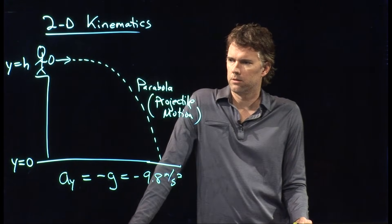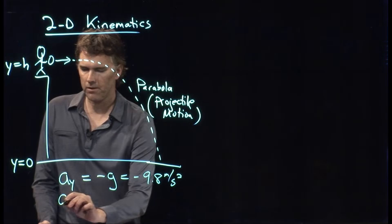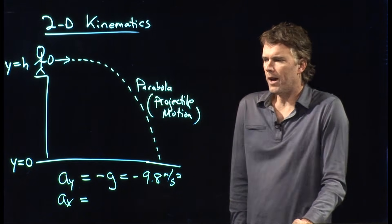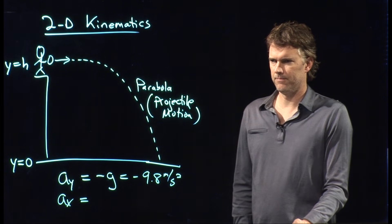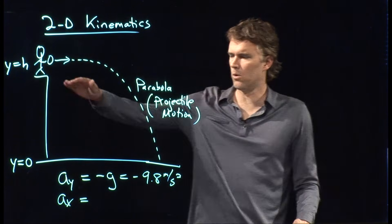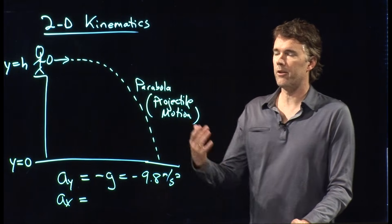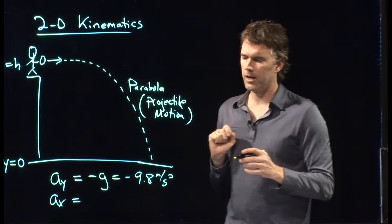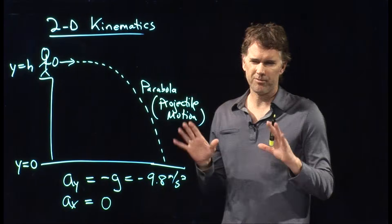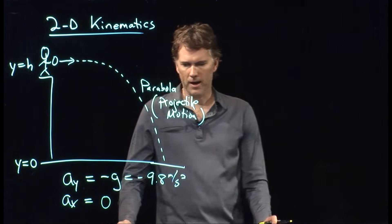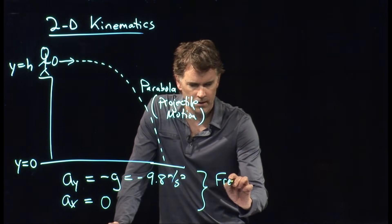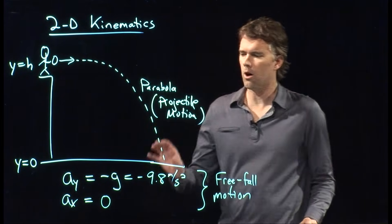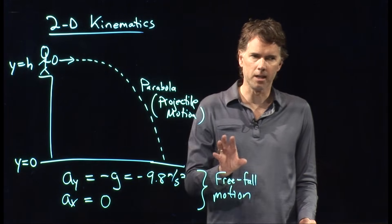What about the x dimension? What is the acceleration in that direction? Zero — because x is horizontal. As we'll learn later, there is no force in the x direction. The only force here is gravity, which acts downward. So there is no acceleration at all in the x direction if we're ignoring air resistance — which we are. This set of conditions is projectile motion, also known as freefall motion. When you are only under the influence of gravity, you are in freefall.